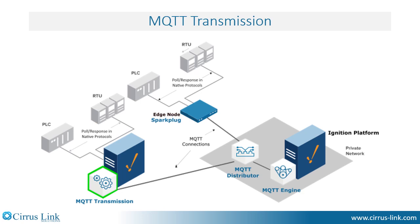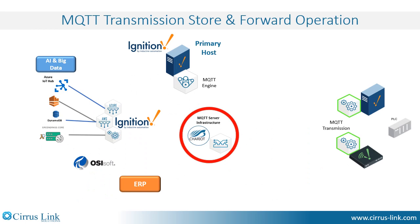This enables any Ignition platform, including Ignition Edge, to have its data published in MQTT, taking full advantage of the benefits it offers. In normal operation, MQTT transmission is publishing data into the MQTT server infrastructure and all subscribed applications are receiving data in real time.